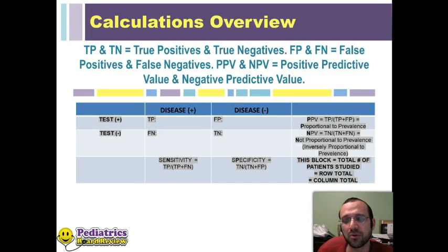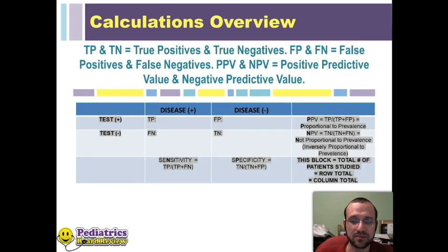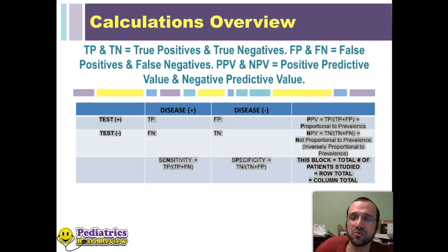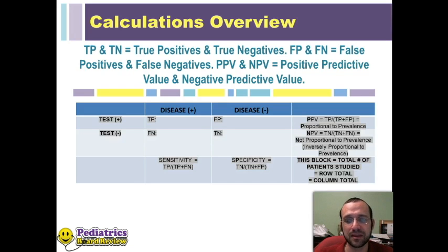In the lower right-hand corner you're going to have your total number of patients, and those should be equal based on the rows and the columns. The boards may give you that number so that you'll have to subtract from it to calculate some of your other numbers on the table. Knowing this table cold is absolutely key to answering these questions.